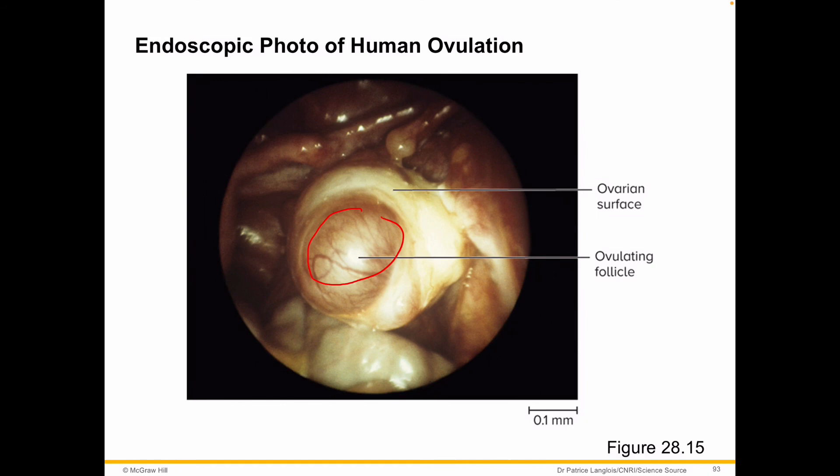Here's kind of what it looks like — this is the ovary and here's that follicle. So you can imagine when that follicle bursts, there would be a little bit of spotting and a little bit of pain.